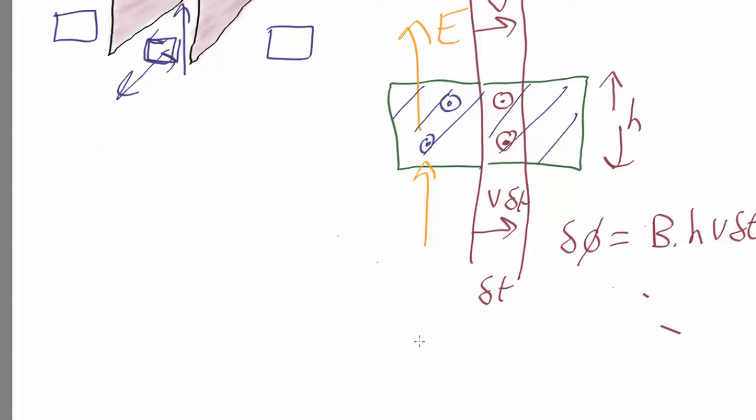So what we get is that the rate of change in the flux dφ/dt is just going to be equal to the magnetic field times h times the velocity. That's the extra magnetic flux that's going to be coming through this region in any given unit time.